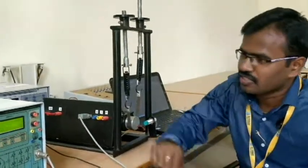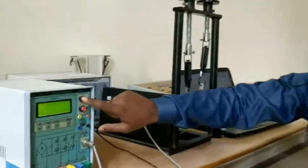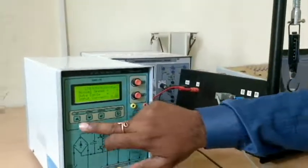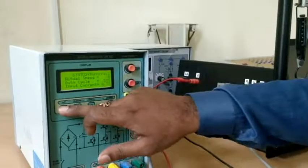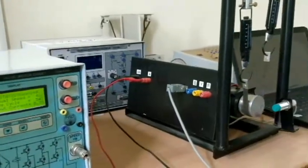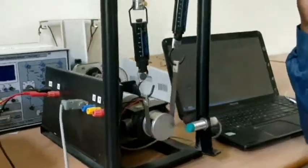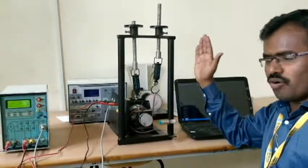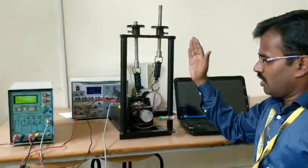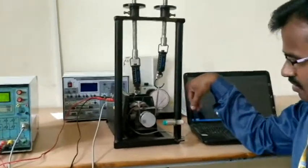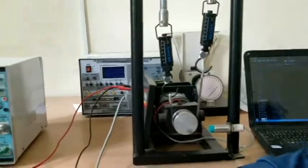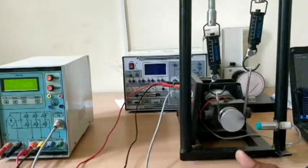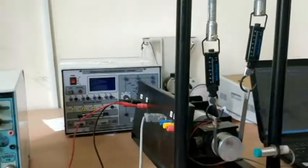Now I am going to increase the speed slowly. We can't set the speed but we can check the speed. This is the difference between open loop and closed loop. Now the sensor senses the speed and it is displayed here. We can't set the speed, so this encoder feedback is not obtained here in this open loop.